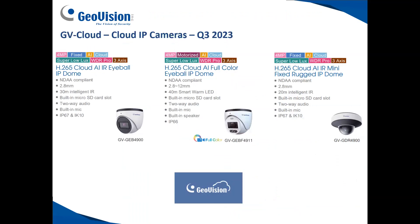GeoVision will release three initial cameras in the cloud IP camera series — two turret cameras and one dome camera, all outdoor rated. The GV-GEB4900 is a 4-megapixel fixed 2.8mm turret camera. The GV-GEBF4911 is a 4-megapixel motorized 2.8-12mm turret camera with a white light LED, built-in mic, and speaker. The GV-GEBF4900 is a 4-megapixel fixed 2.8mm dome camera. This line of cloud cameras will be coming out sometime in Q3 of 2023.